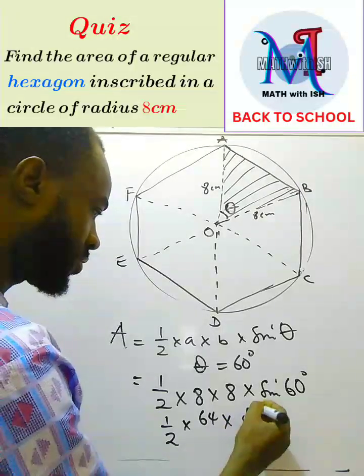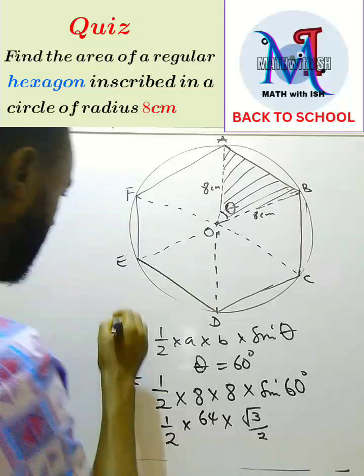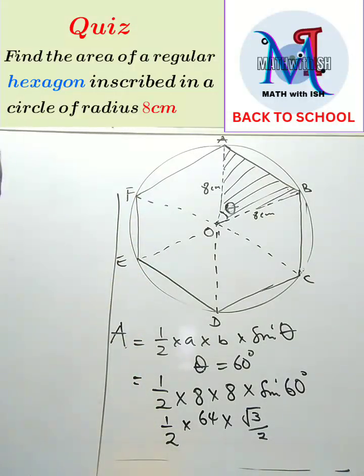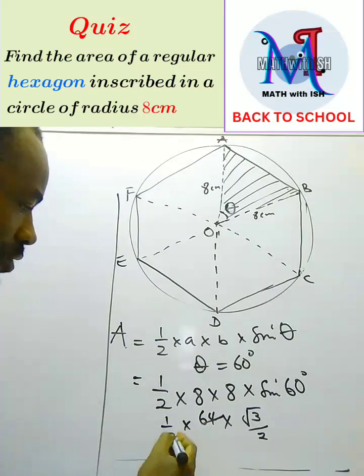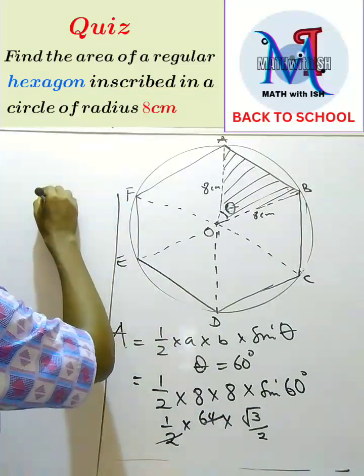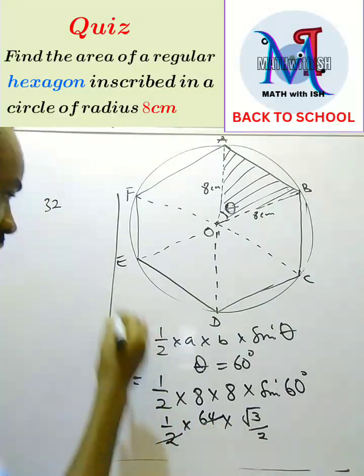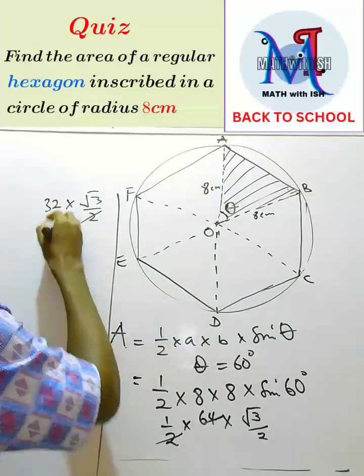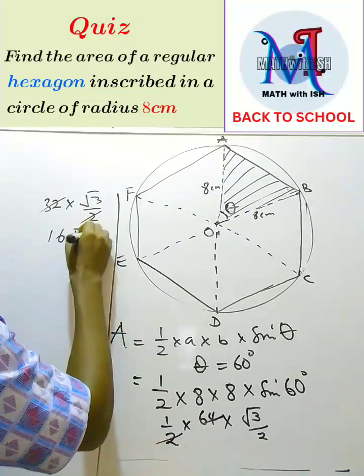This 2 will cancel 64, so 2 cancels 64 that gives us 32, then times √3 over 2. Two also cancels 32 that gives us 16. So we'll have 16√3.